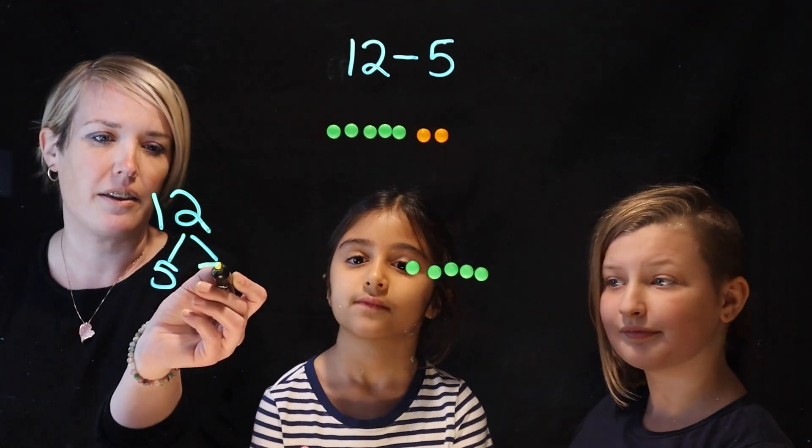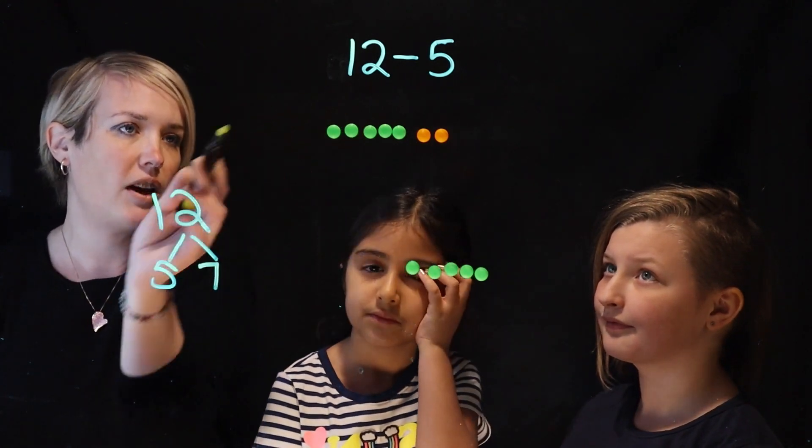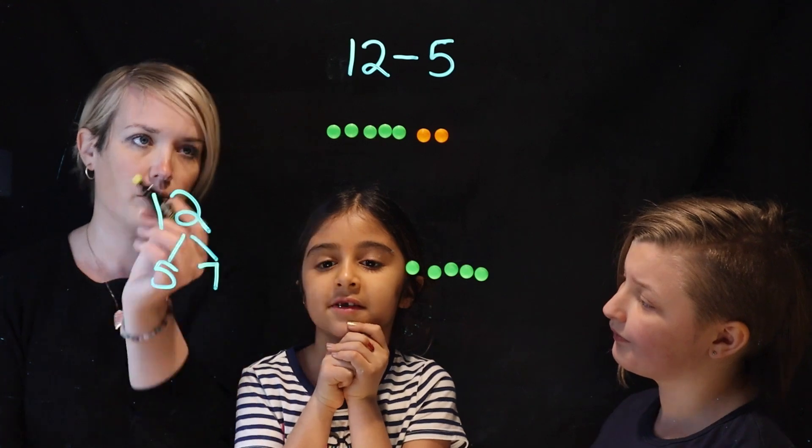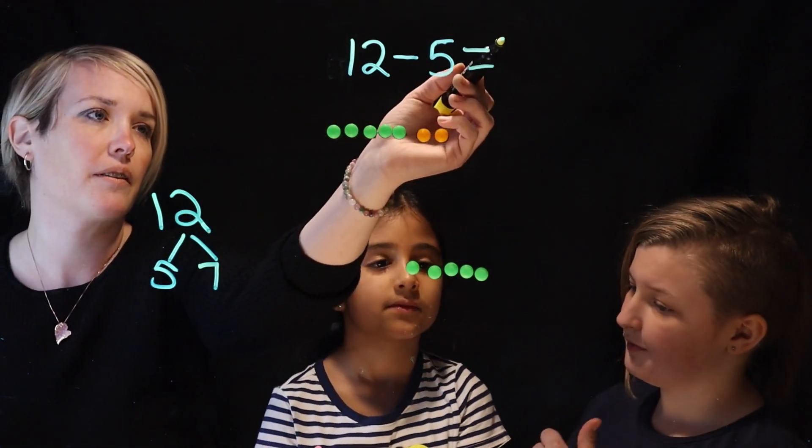Yeah. Okay, so then 12 minus 5 is equal to what, Nikki? 12 minus 5 is equal to 7. Perfect. Good job, Nikki.